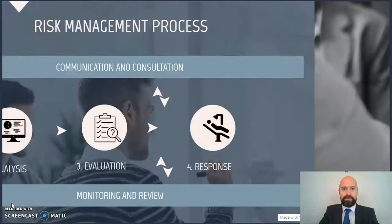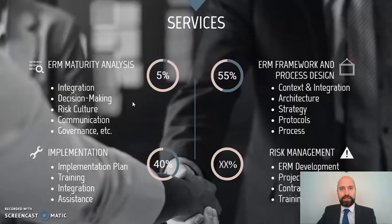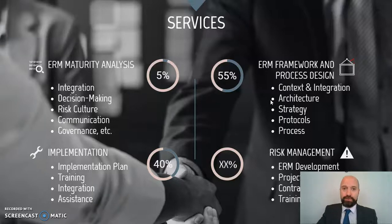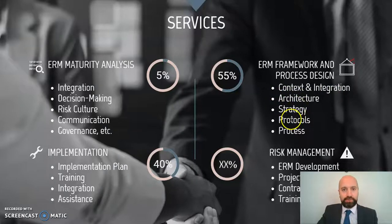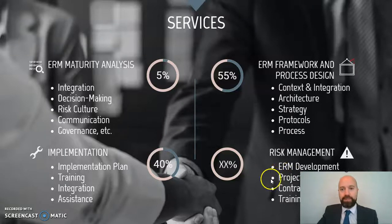Finally, let's move to the services I would like to provide. I have placed here the relative weight of each set of activities in relation to each other. For starters, there will be the enterprise risk management maturity analysis, in order to understand the current state of the organization in relation to integration, decision making, risk culture, communication and governance. From here, we will move to the enterprise risk management framework and process design — covering the design of the architecture, strategy, protocols and the process itself. Next step would be the implementation: delivering and setting an implementation plan, training activities, integration services and assistance. And finally, independent service activities such as further enterprise risk management development, project risk management services, contract analysis or training services.